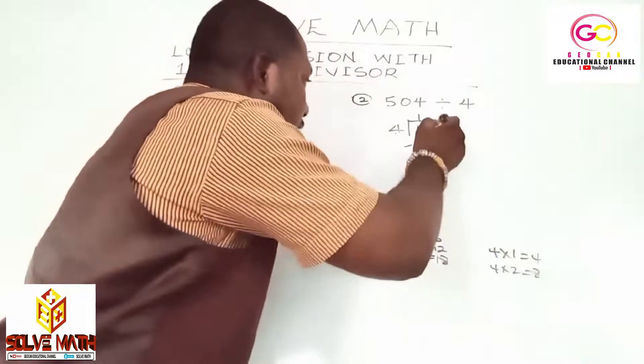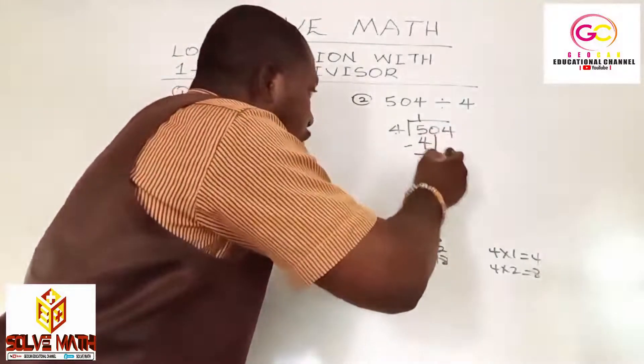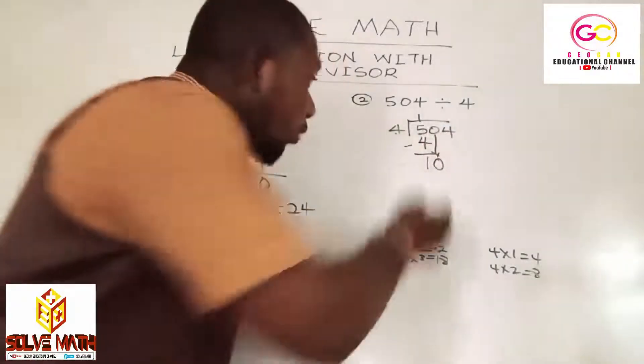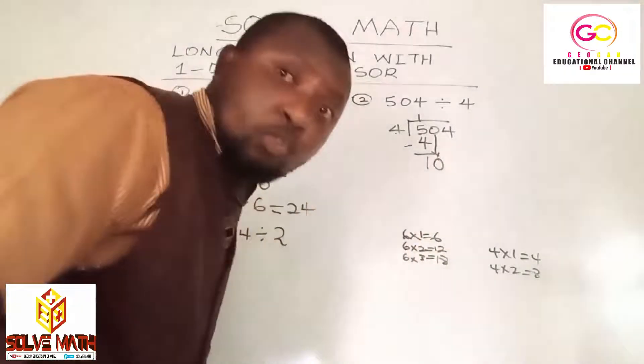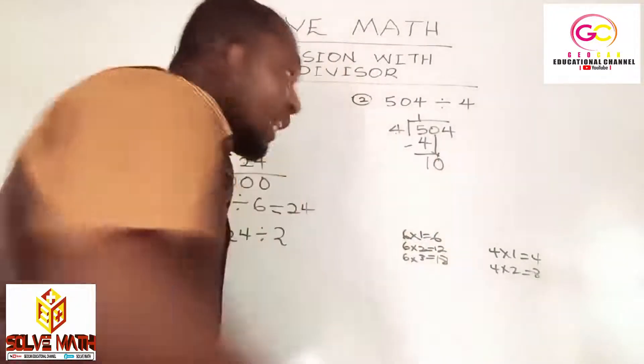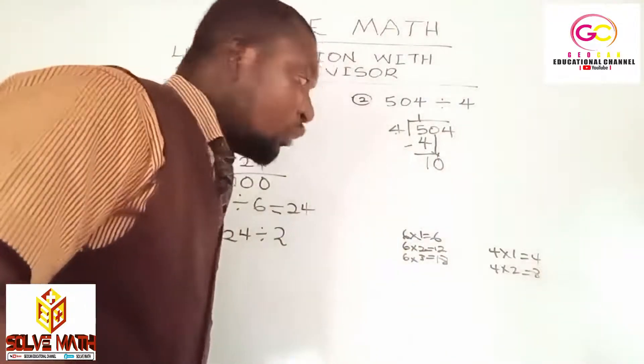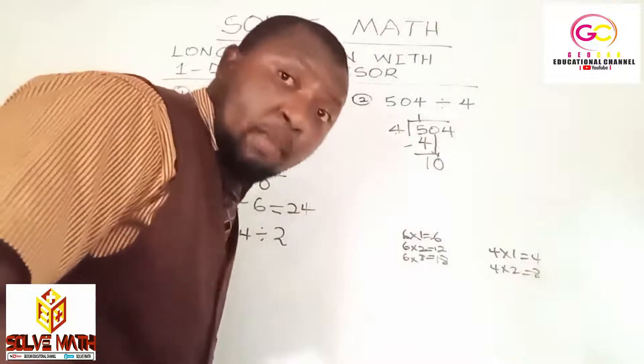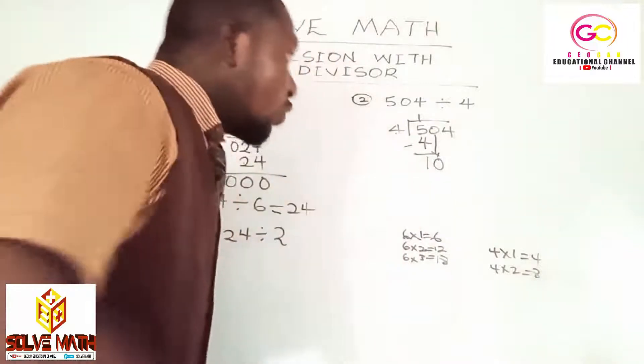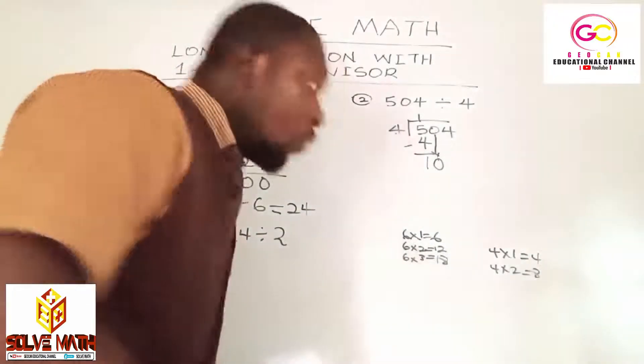Are we done? No. Our next digit is 0. Trace it and join it to the 1. Now what do we have? 10. So 4 will go into 10 how many times? 4 times 1 is 4, 4 times 2 is 8, 4 times 3 is 12. We can't choose 4 times 3 because it will be more than 10. So 4 times 2 is 8.